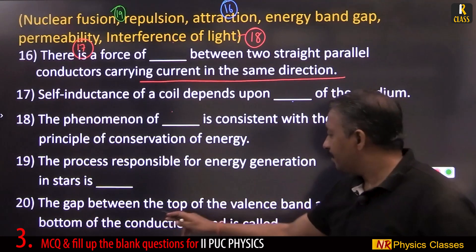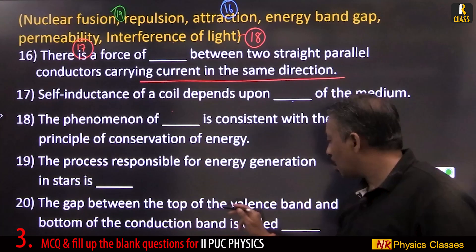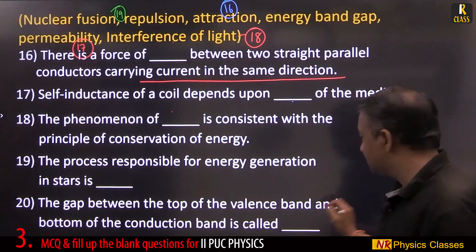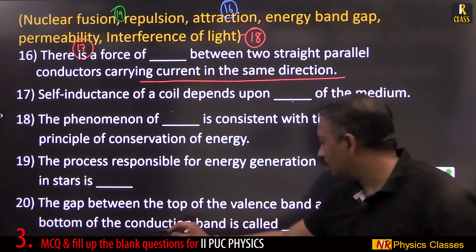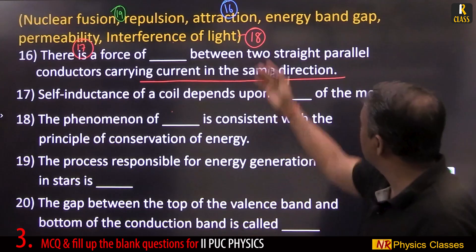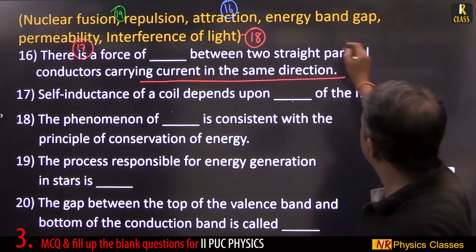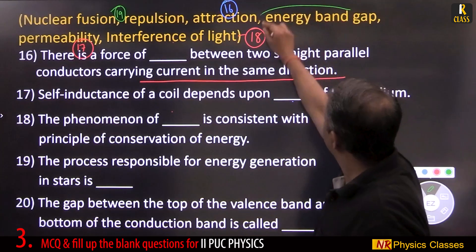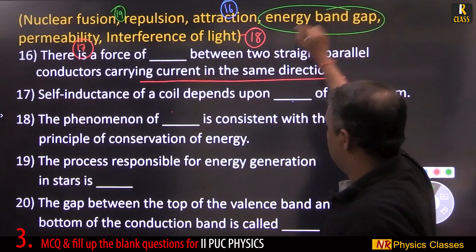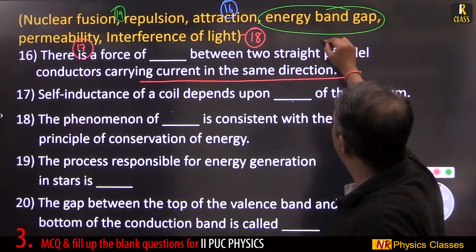The gap between the top of the valence band and the bottom of the conduction band is called the energy gap.